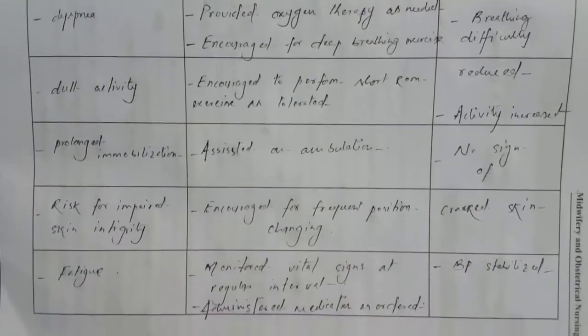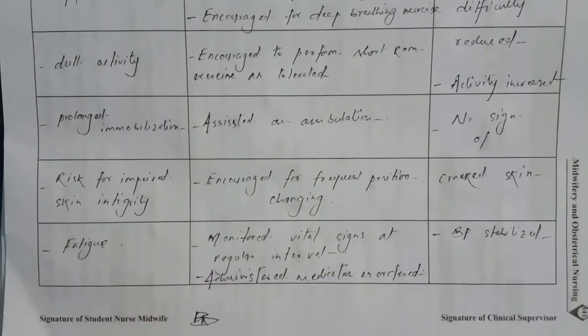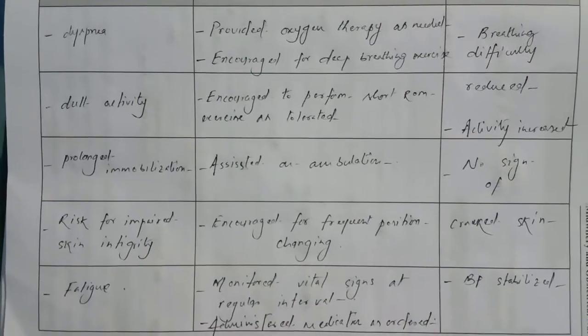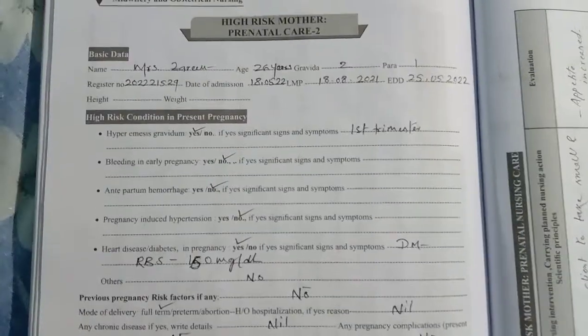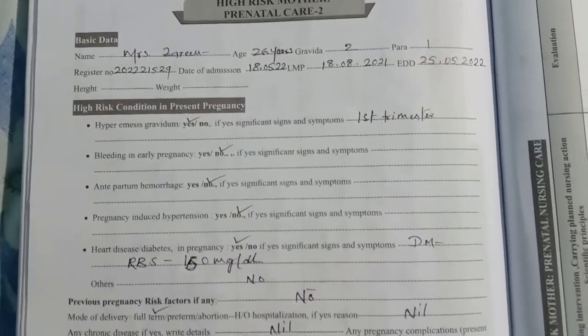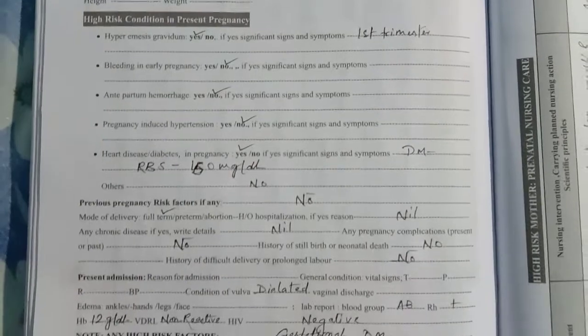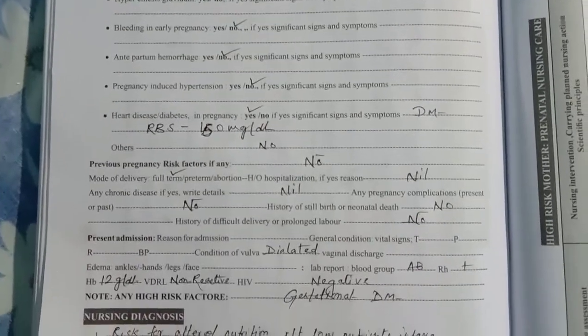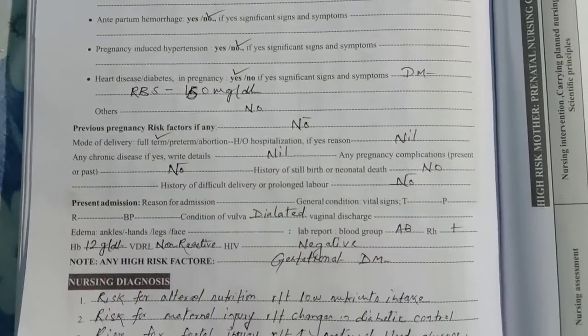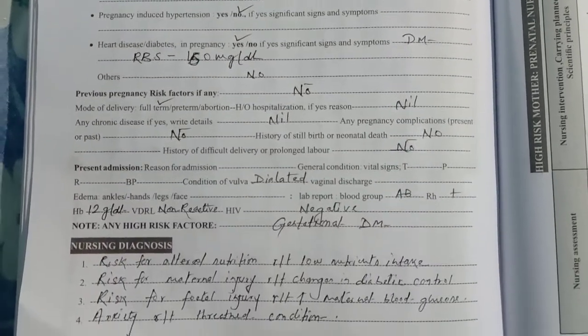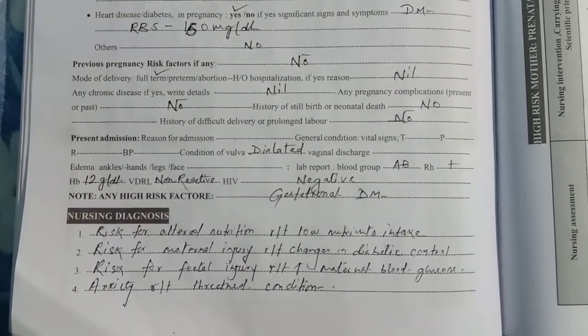This is nursing care for high-risk mother prenatal care 2. Here the high-risk condition is gestational diabetes mellitus.